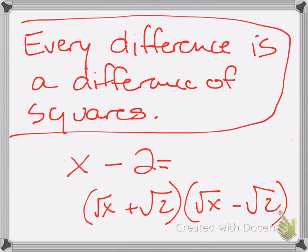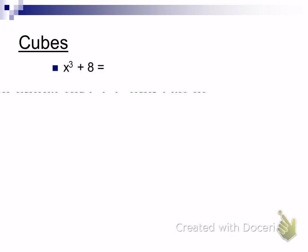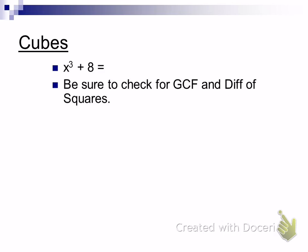This is probably new — has anybody ever shown you this before? Probably not been stretched to this place before, but every difference is a difference of squares is true. So we can factor really anything using this conjugate property of products. Let's move on to cubes.